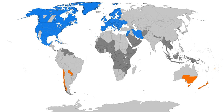Unequal hours are still used in a few traditional settings, such as some monasteries of Mount Athos and all Jewish ceremonies. Benjamin Franklin published the proverb 'Early to bed and early to rise makes a man healthy, wealthy, and wise,' and he published a letter in the Journal de Paris suggesting that Parisians economize on candles by rising earlier to use morning sunlight. This 1784 satire proposed taxing window shutters, rationing candles, and waking the public by ringing church bells and firing cannons at sunrise. Despite common misconception, Franklin did not actually propose DST. 18th century Europe did not even keep precise schedules.